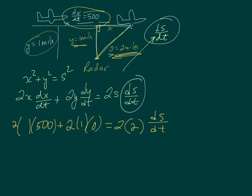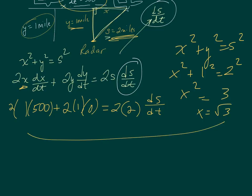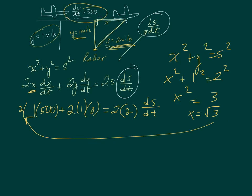So the only thing I need to finish this is to find x. Using x squared plus y squared equals s squared, I know y is 1 and s is 2. So x squared equals 4 minus 1, which is 3. So x equals the square root of 3.